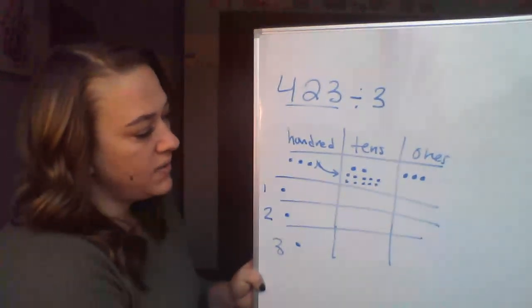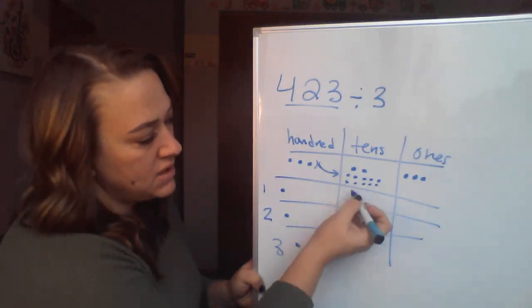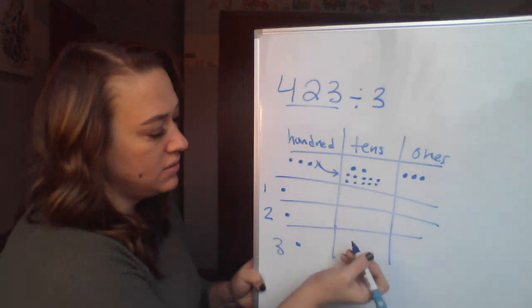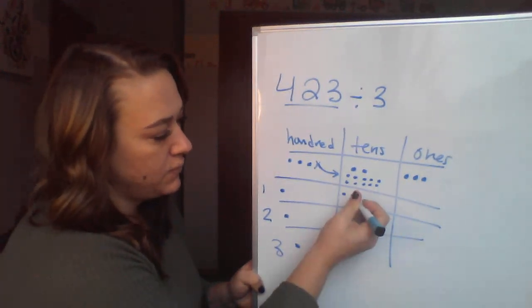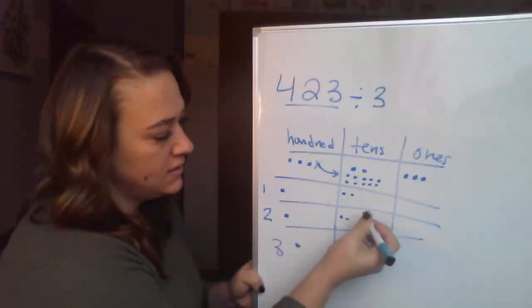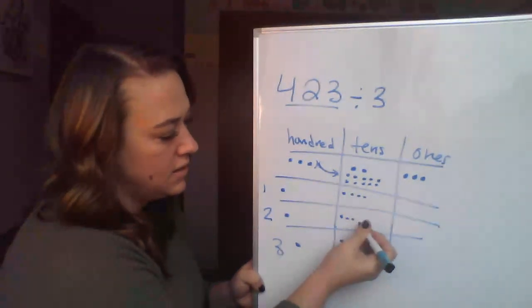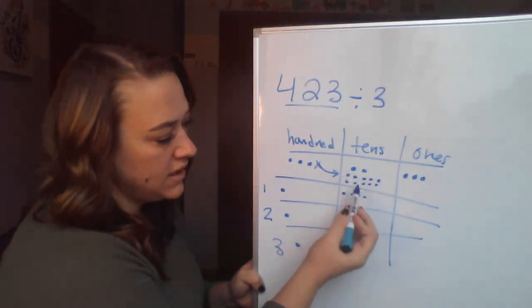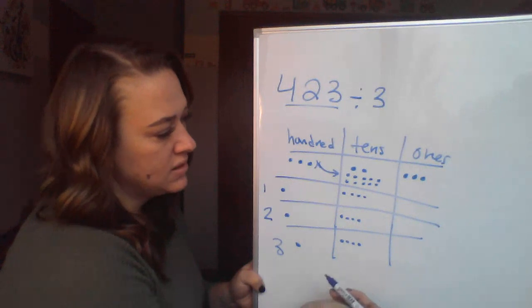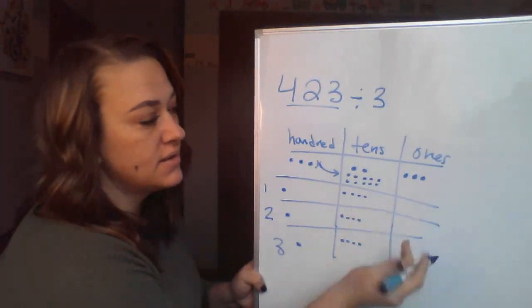Now I have 12 tens that I'm going to decompose evenly in these three groups. So I broke my 12 evenly between those three groups. There's none left over. So there's none I need to decompose to my ones.